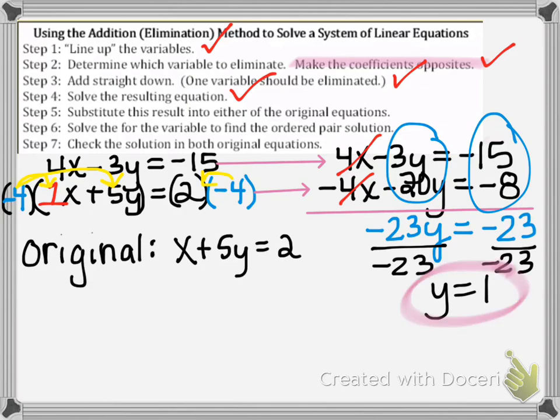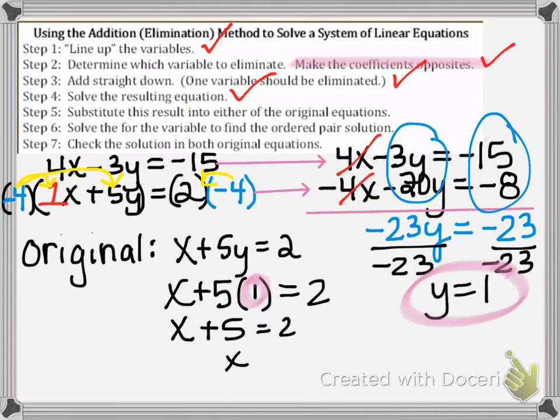So what I'm going to do is I'm going to take the solution y equals 1 and I'm going to replace it for the y in that original equation. So notice where there was a y, now it's 1. Now I'm going to solve that equation, x plus 5 equals 2, so if I subtract 5 from both sides, x equals negative 3.